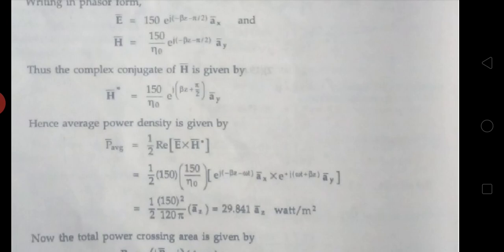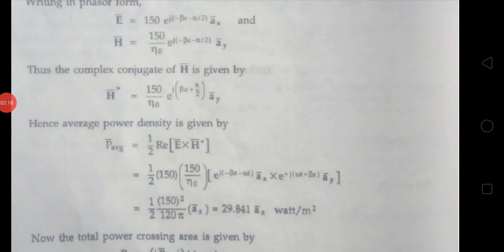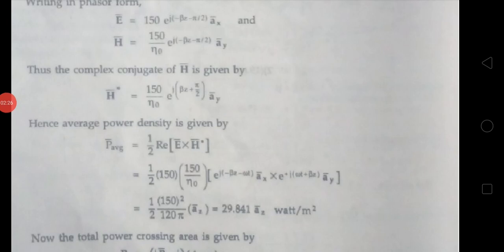Writing in phasor form: E bar equals to 150 e^(j(-βz - π/2)) ax bar, and H bar equals to 150 by η₀ e^(j(-βz - π/2)) ay bar. The complex conjugate of H bar is H bar conjugate equals to 150 by η₀ e^(j(βz + π/2)) ay bar.